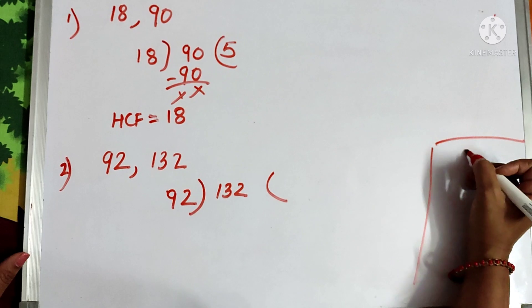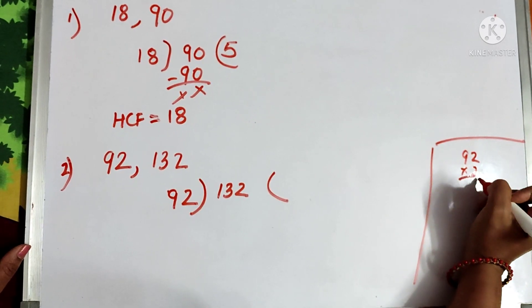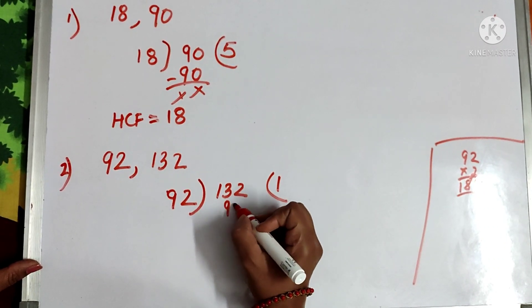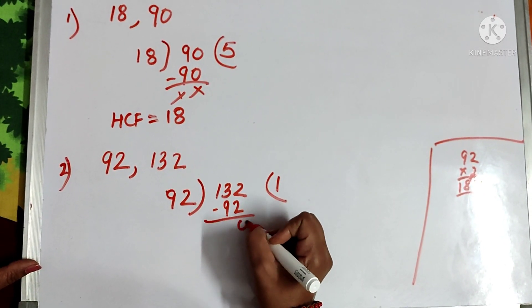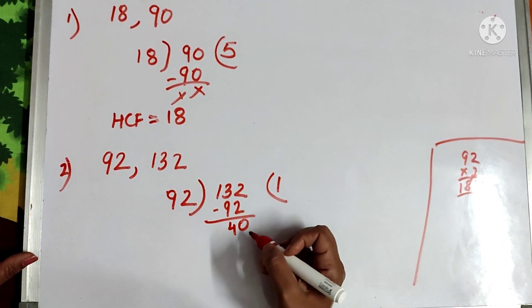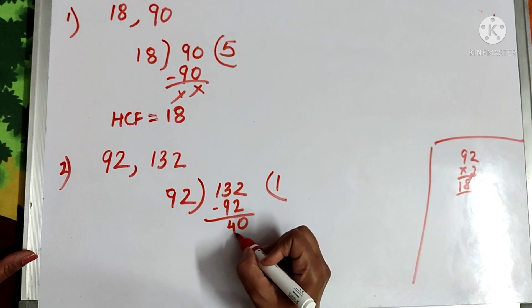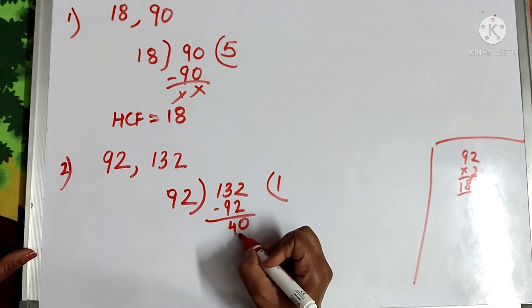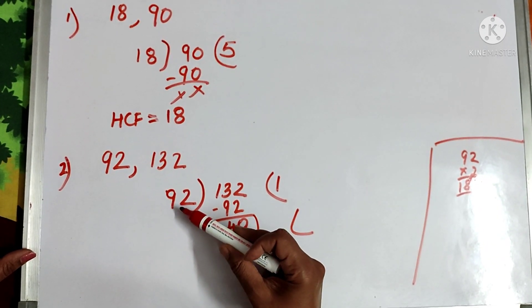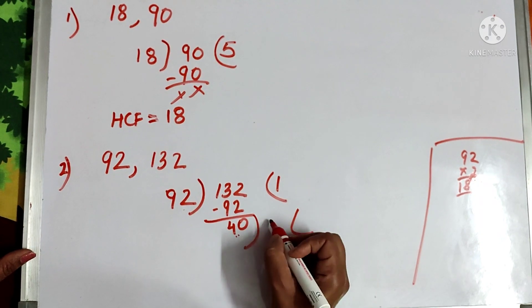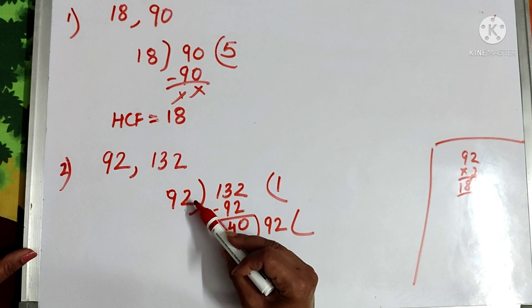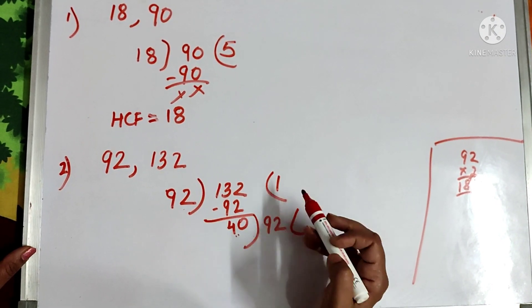92 ones are 92. When I try 2, 2 nines give a greater number, so it goes by 1 — 92 ones are 92. The remainder is: 13 minus 9 is 4, so the remainder is 40. Now this remainder becomes the divisor, and the last divisor, 92, becomes the dividend. Divide the divisor from step 1 by the remainder from step 1.